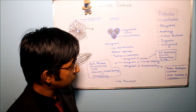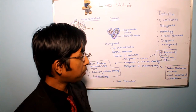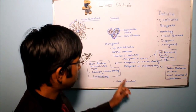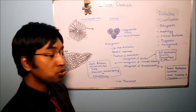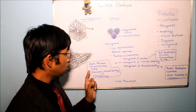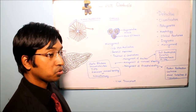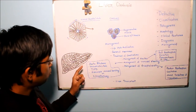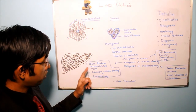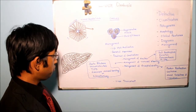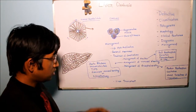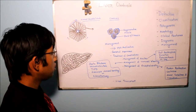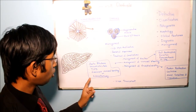Moving on to management of variceal bleeding, treatment options include use of beta blockers, vasoconstrictor medicines, and TIPS — transjugular intrahepatic portosystemic shunt — where a shunt is made that bypasses blood and results in reduction of portal hypertension. TIPS is mainly used here for management of variceal bleeding. Other measures include endoscopic variceal banding or sclerotherapy.